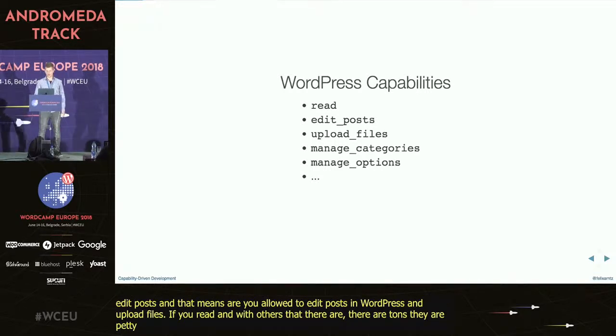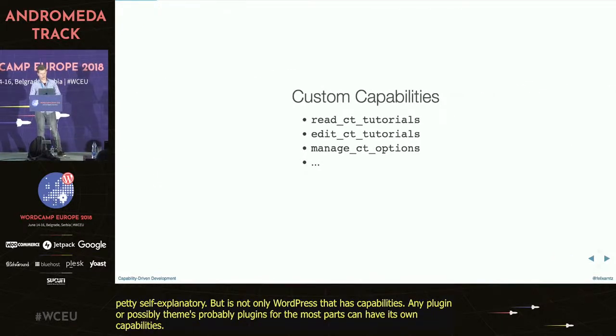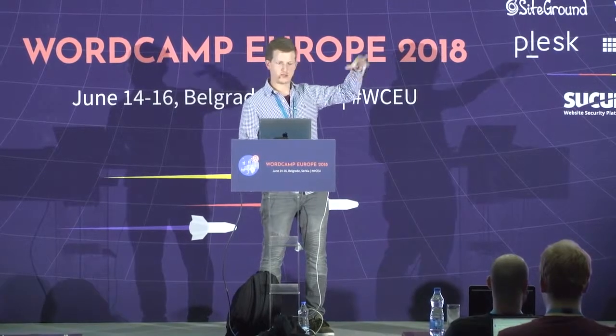However, it's not only WordPress that has capabilities. Any plugin, possibly even themes, but probably plugins for the most part, can have its own capabilities. Let's think about an example where we want to make a very simple plugin that introduces a tutorial post type, and we would want dedicated capabilities for this plugin. We could name them — in this example, let's imagine we call the plugin Capability Tutorials, so we prefix everything with CT. Capabilities for reading tutorials could be read_ct_tutorials, or managing options of this plugin could be called manage_ct_options.